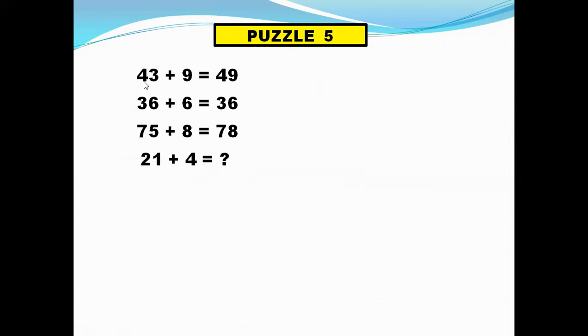So in 43, the first number is 4, we write 4 as it is. And the 9 will come here. Now 36, what is the first number? 3. So we write 3. And in this, we write 6 as it is.